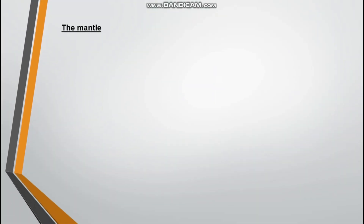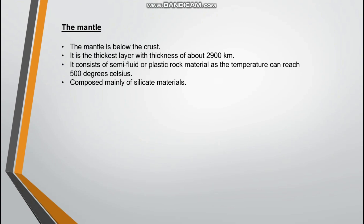Let's go to the mantle. The mantle is below the crust. It is the thickest layer, at about 2,900 kilometers. They might ask you which layer is the thickest — the answer is the mantle. It consists of semi-fluid or plastic rock material, as the temperature can reach 500 degrees Celsius. In a exam question, if they say semi-fluid plastic rock material, just know they are talking about the mantle. It is composed mainly of silicate materials.